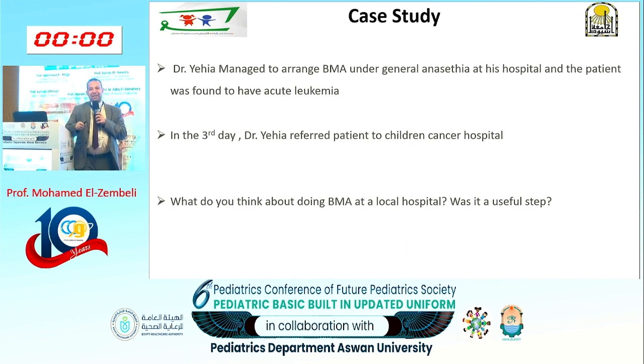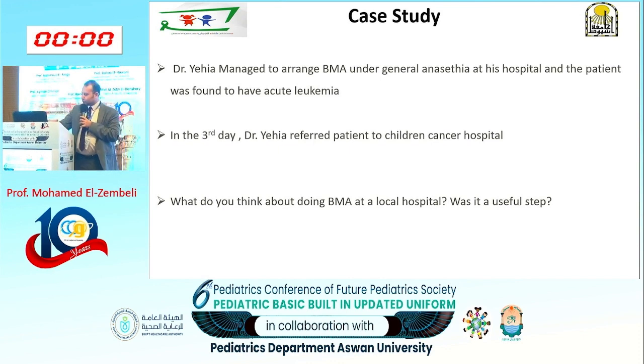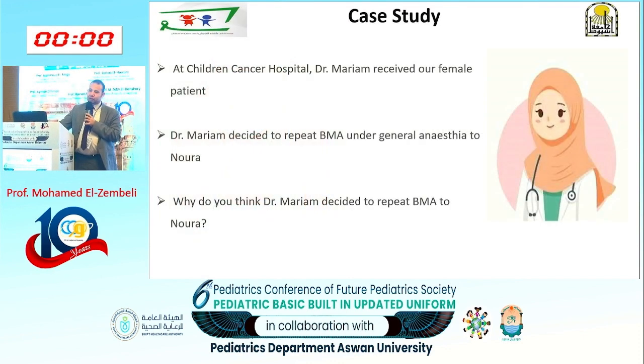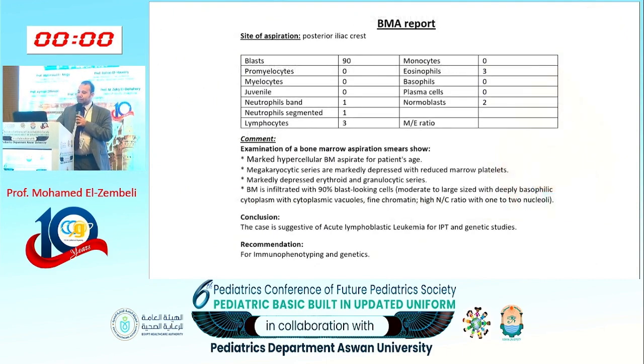Why do we say not to do the bone marrow aspiration before referral? Because at the cancer hospital, we will do another aspiration anyway. Why? Because our bone marrow aspiration will include morphology, immunophenotyping to determine the type of leukemia — lymphoblastic or myeloid, B-cell or T-cell — and cytogenetics and molecular studies to determine the patient's risk stratification. So if the diagnosis is already established and you did an aspiration, I will have to do another one, unnecessarily exposing the patient to general anesthesia twice.